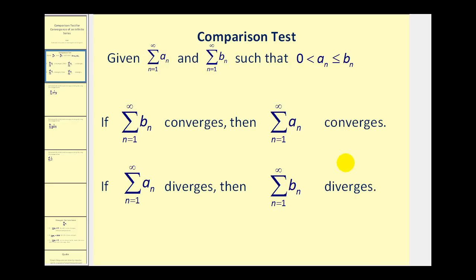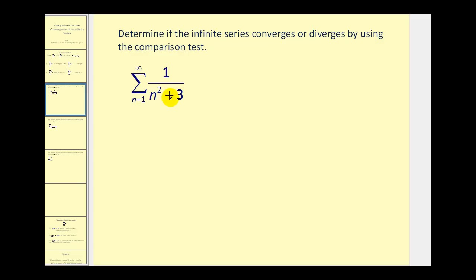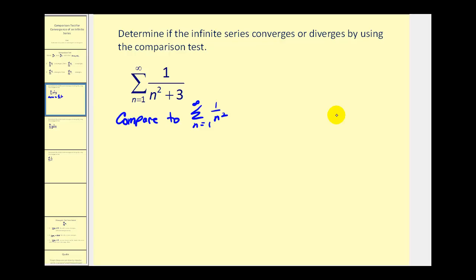Let's take a look at some examples. We want to determine if this infinite series converges or diverges using the comparison test. To apply the comparison test, we have to be able to recognize another infinite series that we already know about that converges or diverges. Now this looks very similar to the formula one over n squared, which we could apply the p-series test to. So let's try comparing this to the infinite series of one over n squared. This series converges since p is equal to two by the p-series test.